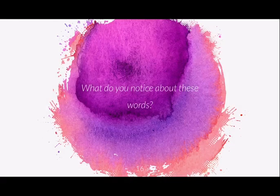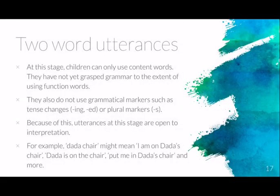These words are content words — children do not yet have enough grammar to use function words or understand their role. They also don't use grammatical markers such as tense changes; inflection and morphemes are not yet understood. Because of this, their two-word utterances are quite open to interpretation. For example, 'dada chair' might mean 'I am on dada's chair,' or 'dada is in the chair,' or 'put me in dada's chair' — requiring trial and error from the listener.